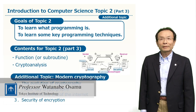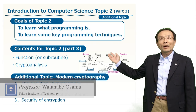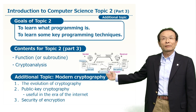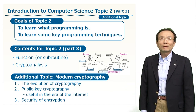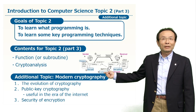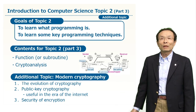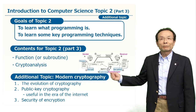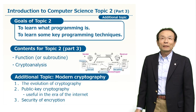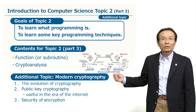Let me now provide some additional explanations on Topic 2. As we have gone through Topic 2, we have focused on programming techniques. But since we chose cryptography as a practical application example, it would be a waste not to talk about modern cryptography. We will study this a little bit, starting with the evolution of cryptography, and in particular, public key cryptography, which has become widely used in recent days. I will also tell you about the safety of cryptography as a summary of this additional topic.